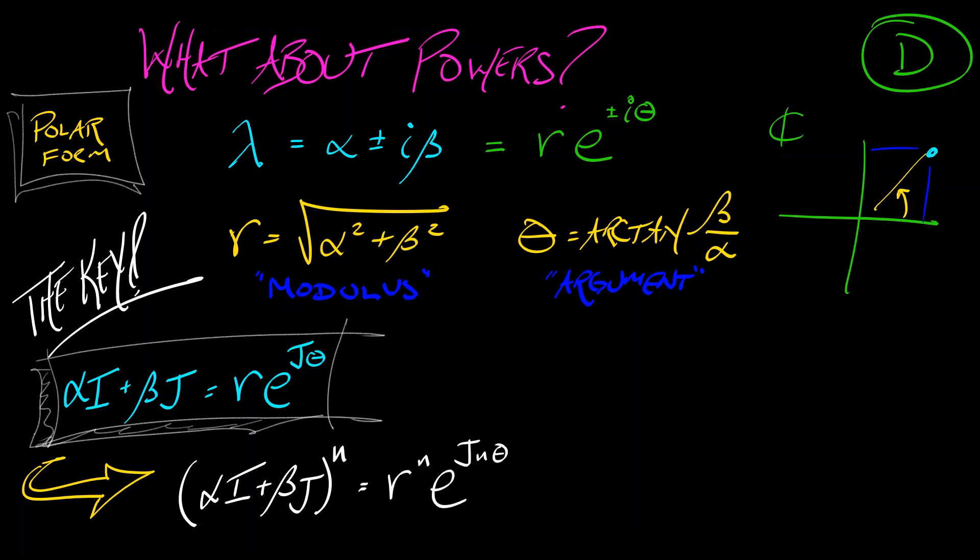That's R to the nth times E to the J times N times theta. And if we write out the components of that, this is going to become R to the n cosine of N theta, R to the n sine of N theta, minus R to the n sine of N theta, and R to the n cosine N theta. And that's it.